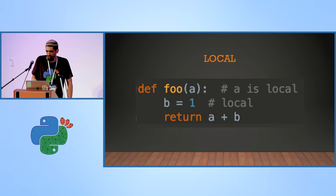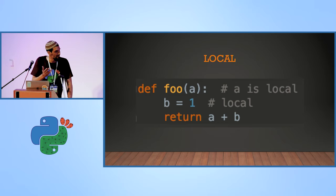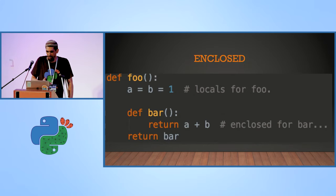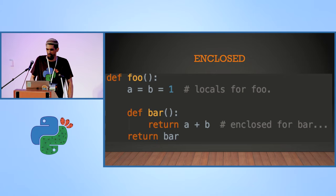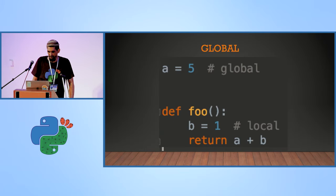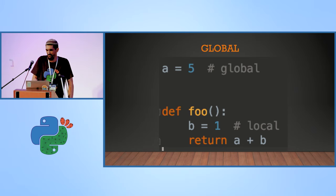A simple example of the local scope: you have variables, you have arguments for the functions that are also local, and that's pretty trivial. Enclosed scope: you have a function that defines a bar function. Bar can access the A variable and B variable that are defined in the enclosed scope. Some people call these non-closed variables, but it's really confusing so I won't use that term a lot. Global scope: you have all things defined in the module — the functions, the variables — and they can be accessed from anywhere in the same module.